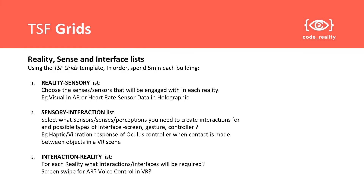The grids are created by first making a grid for realities against senses — that's the original matrix image, with realities listed vertically and sensory channels horizontally, showing which senses will be engaged in each reality. The sensory interaction list has senses on the vertical and interactions like passive, active, and interactive on the horizontal, showing what kind of interactions we want per sense. Lastly, the interaction-reality grid lists realities and shows what kinds of interactions we want in each — combining all three factors to get a full map and audit of everything we want in our experience.